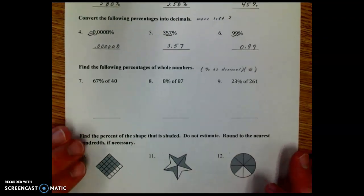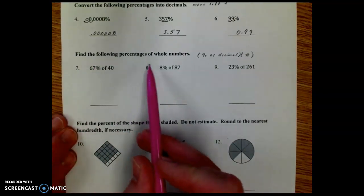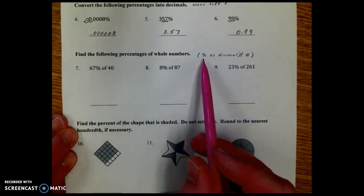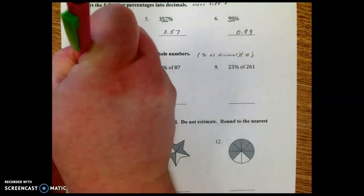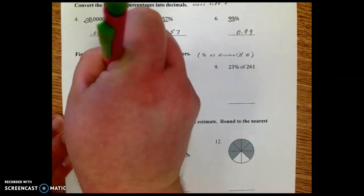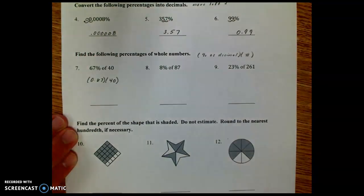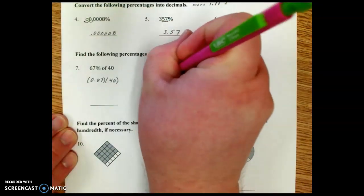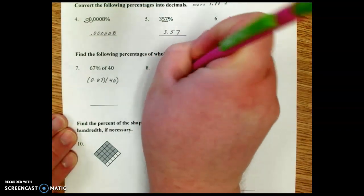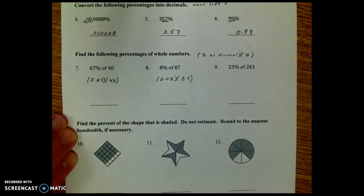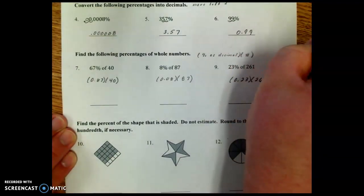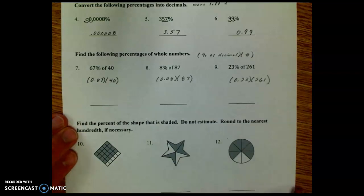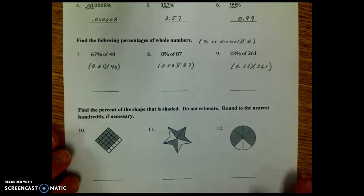The next section, number 7, 8, and 9, what you need to do is find the following percent of whole numbers. You need to write the percent as a decimal and then multiply by the number. So this would be 0.67 times 40. This would be 0.08 times 87. And this would be 0.23 times 261. And you would plug each of those in your calculator to get an actual amount.